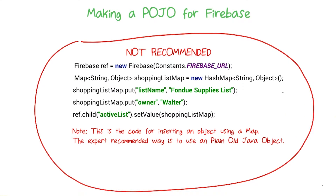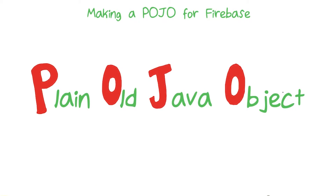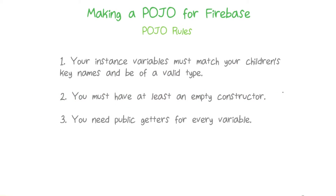You can easily forget a key-value pair, though, so this is not the recommended way to do it. The expert recommended way to do this is to make a POJO — a plain old Java object. Then you can use Firebase's built-in serialization capabilities to both put Java objects into the database and take Java objects back out. To allow the Firebase SDK to do this, our object structure needs to adhere to a few simple rules. Let's go ahead and take a look at each of these.